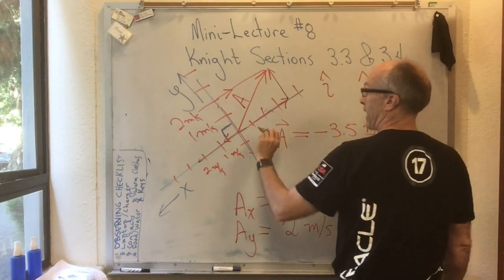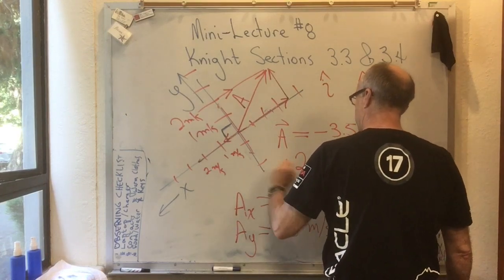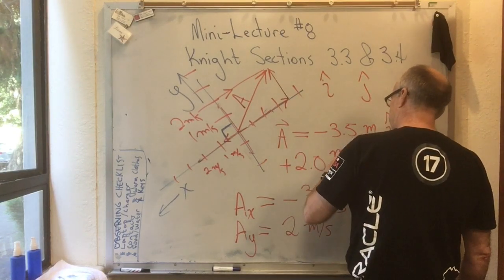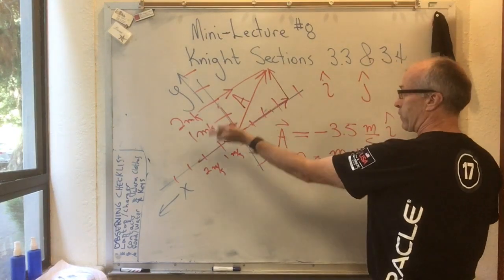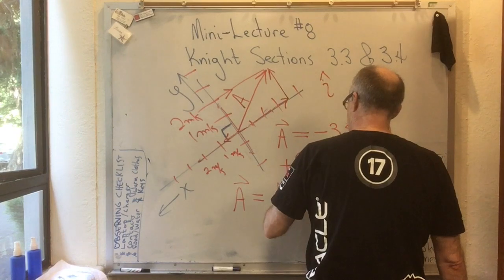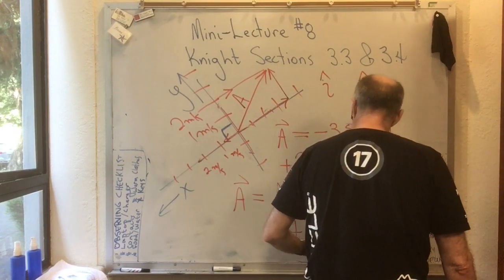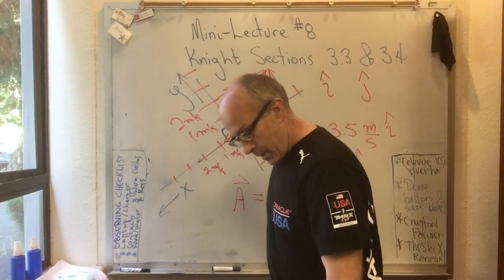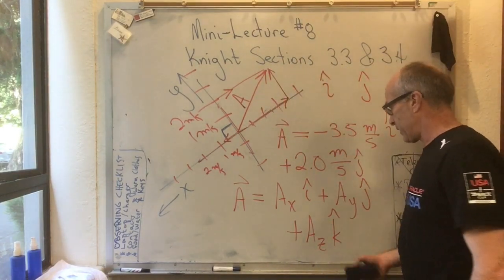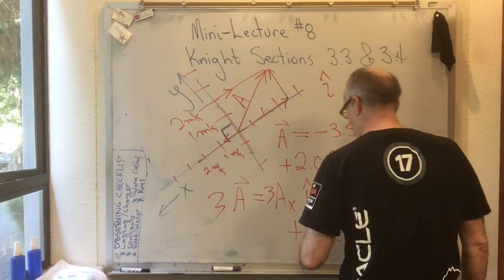So for our example, the x-component of vector a is minus 3.5 meters per second times i-hat, and the y-component is 2.0 meters per second times j-hat. In general, a equals a-sub-x times i-hat plus a-sub-y times j-hat, and in three dimensions you add a-sub-z times k-hat. You can do all the usual algebraic things — combine like terms, add, subtract. If you take 3a, it just becomes 3ax, 3ay, and 3az.